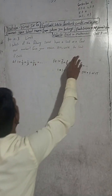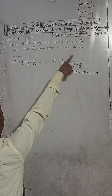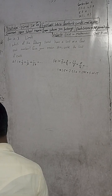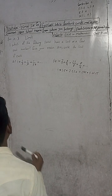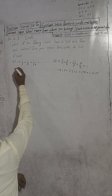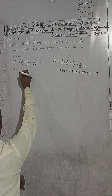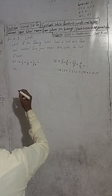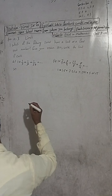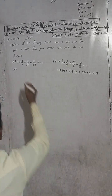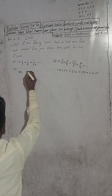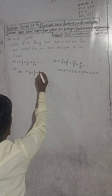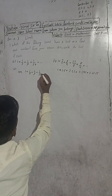The question is: which of the following series have a limit as a fixed real number? Give your reason also. Here is the solution. The series is: 1 plus 1 by 3 plus 1 by 9 plus 1 by 27 plus...